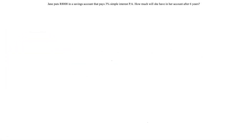In this lesson we're going to go over some examples where we use the simple interest formula that we discussed in the last video, and hopefully that is going to clear things up for anybody who is confused. Here we have one example: Jane puts 8,000 Rand in a savings account that pays 3% simple interest per annum — PA is an abbreviation for per annum, which just means per year. How much will she have in her account after 6 years?